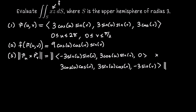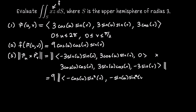Taking the cross product, I notice both vectors have a factor of 3 in every coordinate, so I factor out 3 from each, giving 9 out front. The first coordinate of the cross product is negative cosine(u) sine²(v), and the second coordinate is negative sine(u) sine²(v).